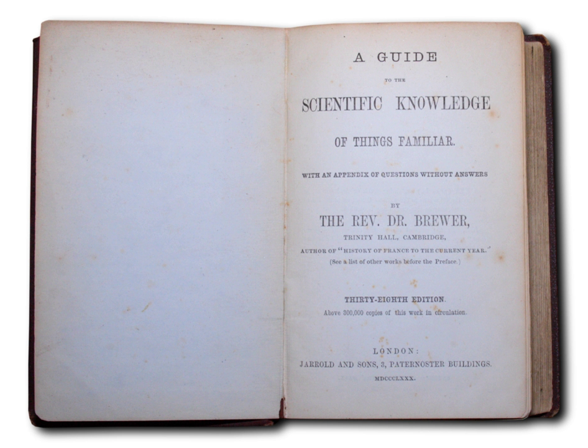A Guide to the Scientific Knowledge of Things Familiar, also known as The Guide to Science or Brewer's Guide to Science, is a book by Ebenezer Cobham Brewer presenting explanations for common phenomena. First published in the United Kingdom around 1840, the book is laid out in the style of a catechism and proved very popular. Forty-seven editions were printed by 1905 in English alone and translations made into various other languages.